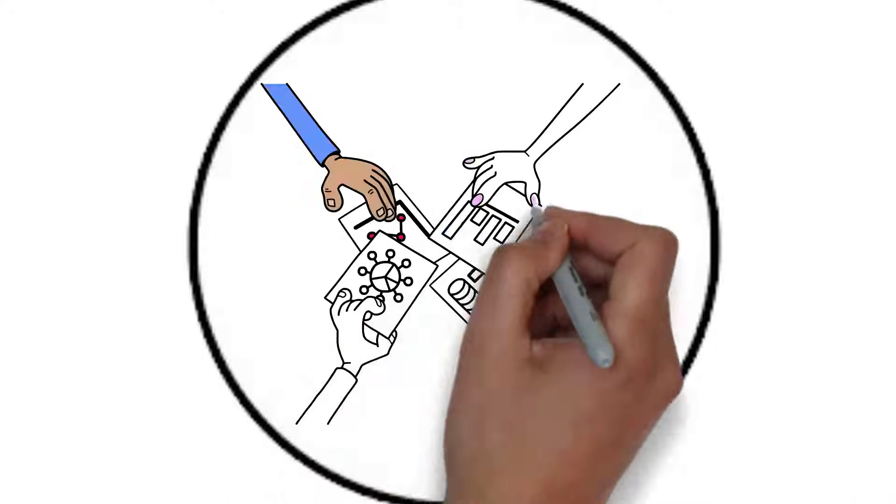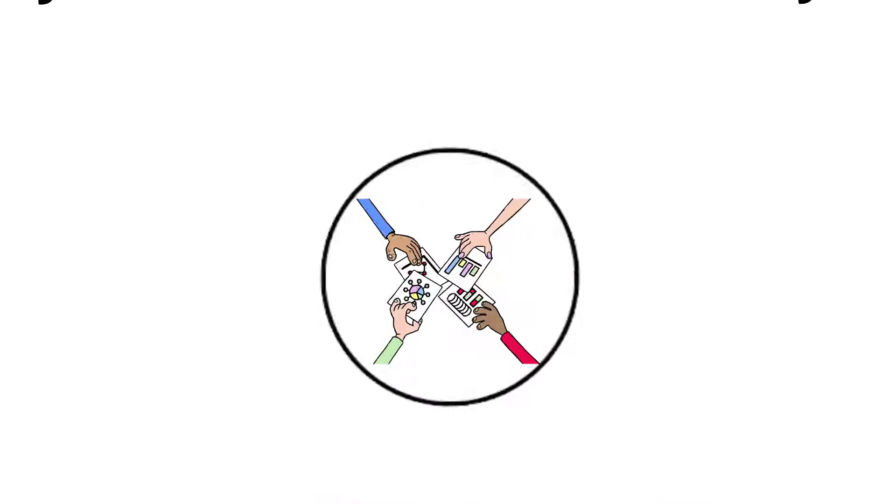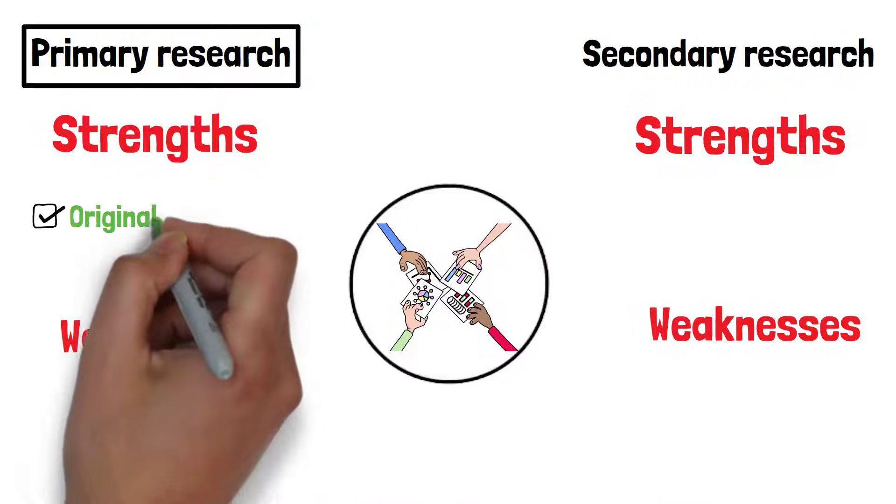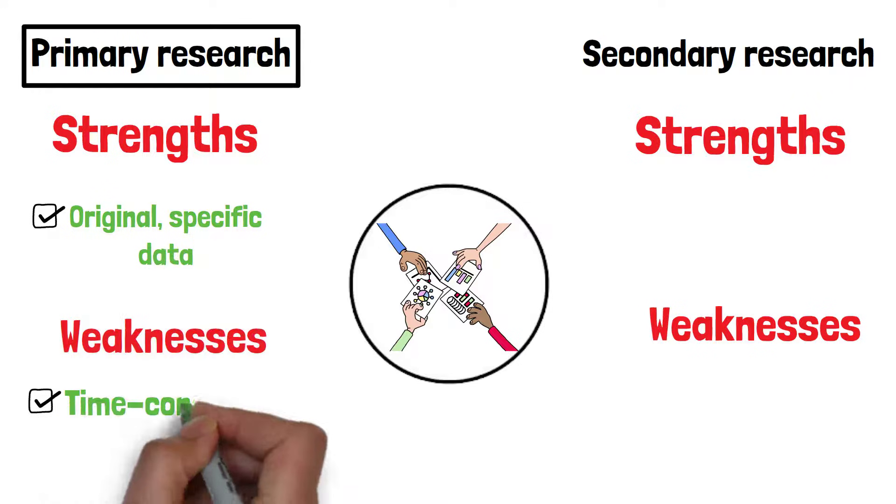Overall, both primary and secondary research are valuable methods of gathering information, each with their own strengths and weaknesses. Primary research provides original, specific data, but is time-consuming and costly.